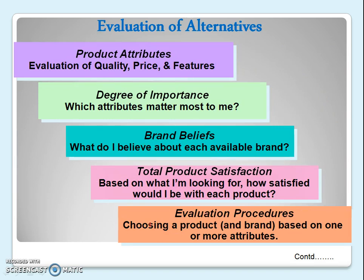Now the third step of the consumer buying process: evaluation of alternatives. After collecting information, we are confused about various brands and want to select one. For evaluation, we have different parameters in mind — product attributes. Some people prioritize quality, some want better prices, some want better features. It depends on which attribute matters most, so you assign weightage to the most important attribute.